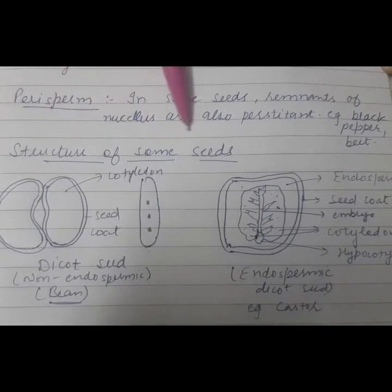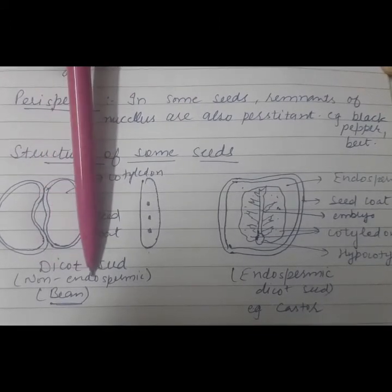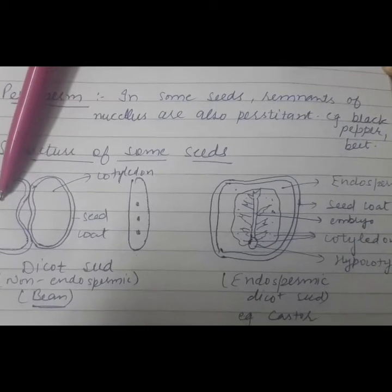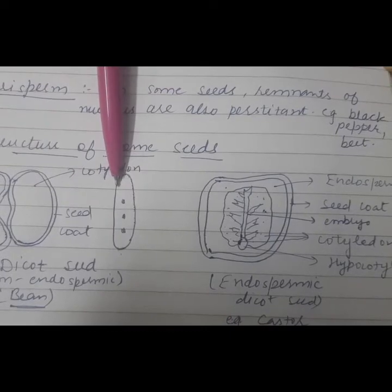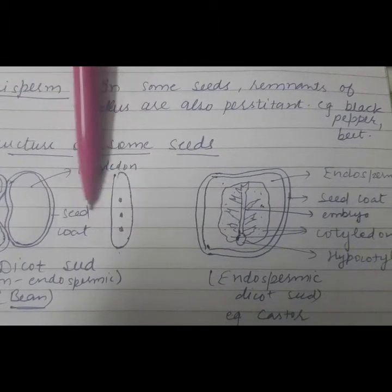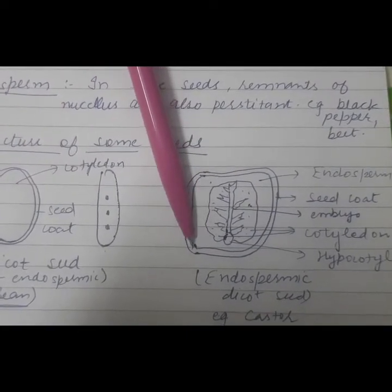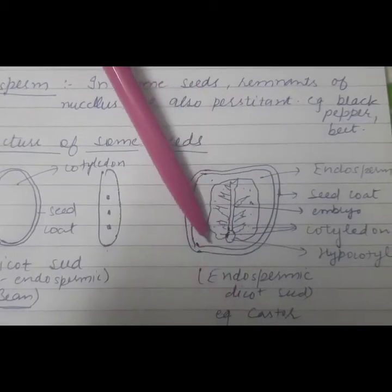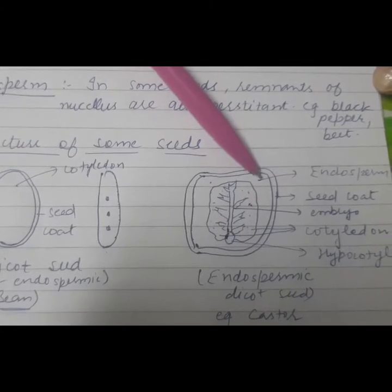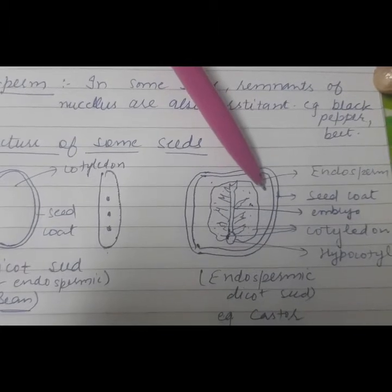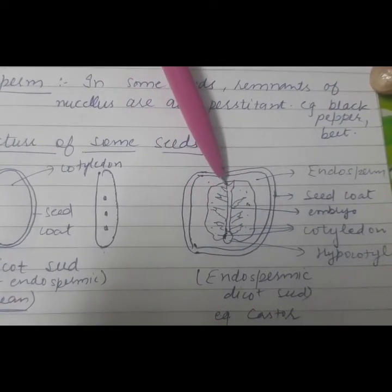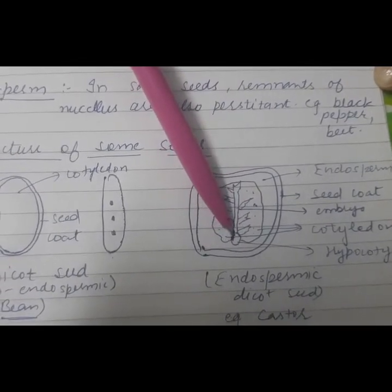Let us now see the structure of some seeds from the textbook. This is a dicot non-endospermic seed — for example, bean seed. It has two cotyledons because there is no endosperm, and the outer layer is the seed coat. When you see this seed from the front you can see two scars along with one micropylar opening. The second is the endospermic dicot seed — example is castor seed. It has an outer seed coat, then endosperm inside the seed coat, and the two cotyledons inner to the endosperm. A branch-like structure represents the embryo inside the seed.